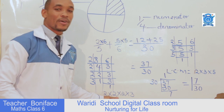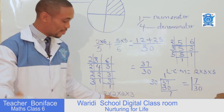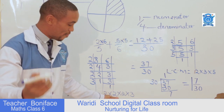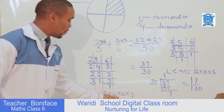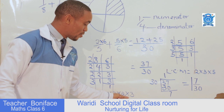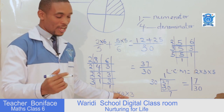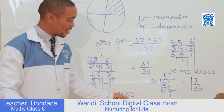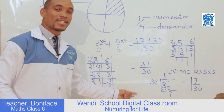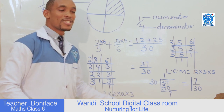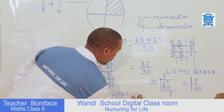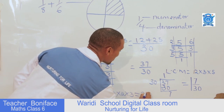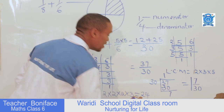Two times two is four, four times two is eight, and eight times three is twenty-four. So our LCM is twenty-four.